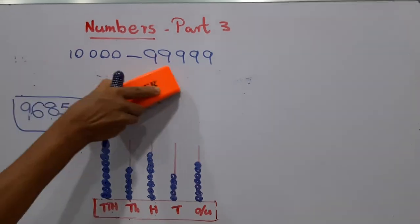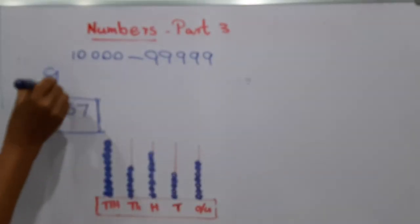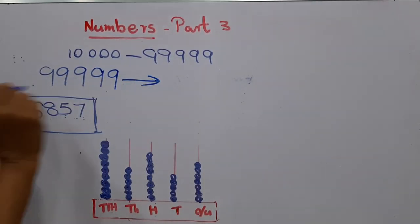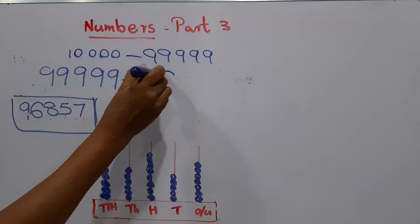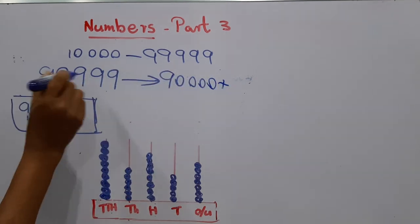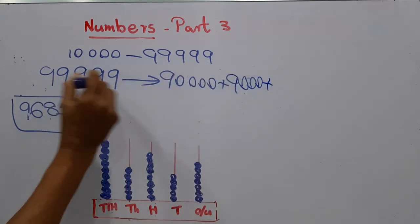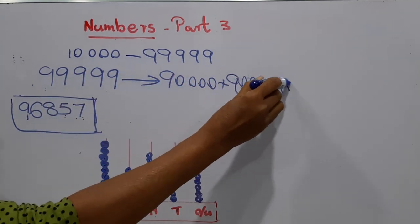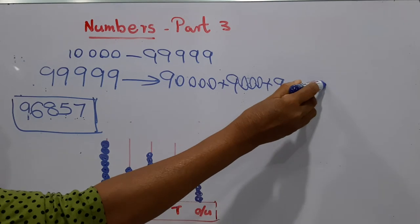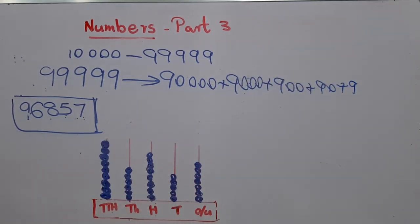Now we'll move to the biggest number in the five-digit numbers. What is the number? Ninety-nine thousand nine hundred and ninety-nine. Shall we spread this number? How many ten-thousands? Nine ten-thousands means ninety thousand. How many thousands? Nine thousand. How many hundreds? Nine hundred. How many tens? Ninety. Plus how many ones? Nine.